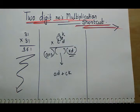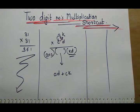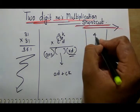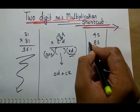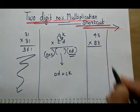Let's see one question. The question is 45 into 83. Now 5 into 3 is 15.